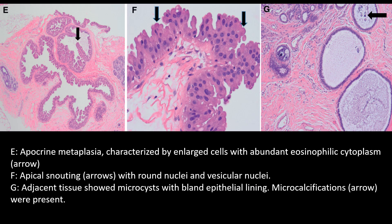In panel E, apocrine metaplasia is shown, characterized by enlarged cells with abundant eosinophilic cytoplasm. In panel F, apical snouting with round nuclei and vesicular nuclei are shown. In panel G, adjacent tissue showed microcysts with bland epithelial lining. Microcalcifications were also present.